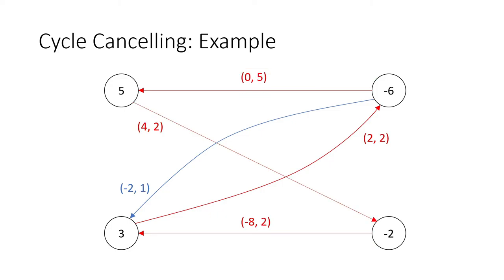Since we found a negative cost cycle, we exploit it by sending the maximum flow through it. The capacities along the cycle are five, two, two, and two, so the minimum is two. We send two units along this cycle, zeroing out the minimum-capacity edges. This updates our residual graph: forward edge capacities decrease, backward edge capacities increase. Now we can still send two units forward on one edge where before we could only send five units backward; now only three units can go backward.